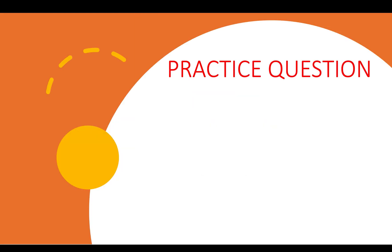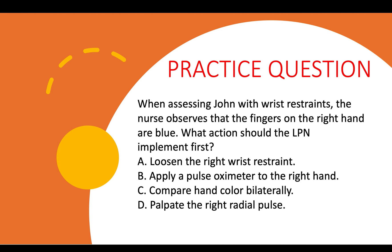Here's a practice question where we can use this concept. When assessing John with wrist restraints, the nurse observes that the fingers on the right hand are blue. What action should the nurse or LPN implement first? A) Loosen the right wrist restraint, B) Apply a pulse oximeter to the right hand, C) Compare hand color bilaterally, or D) Palpate the right radial pulse.